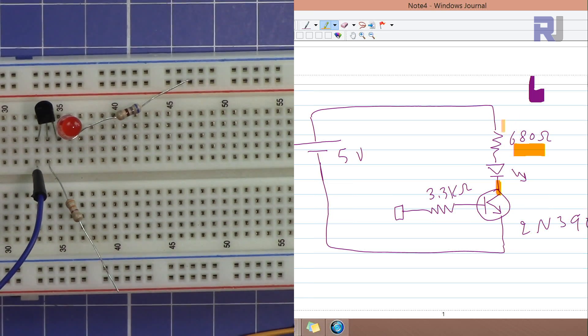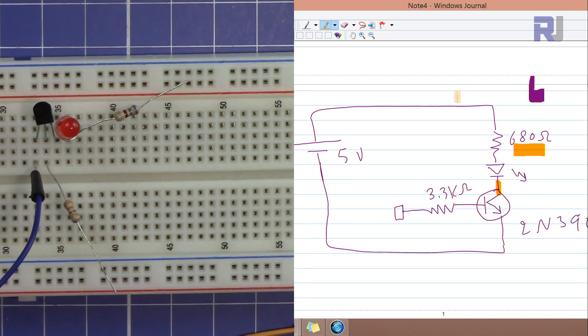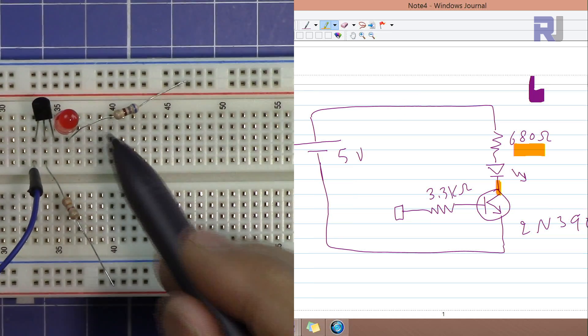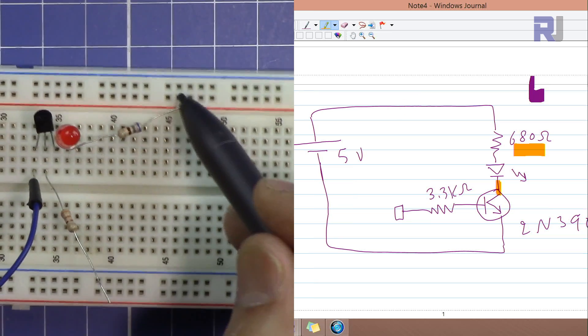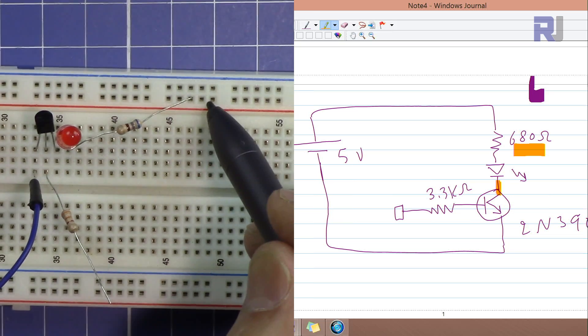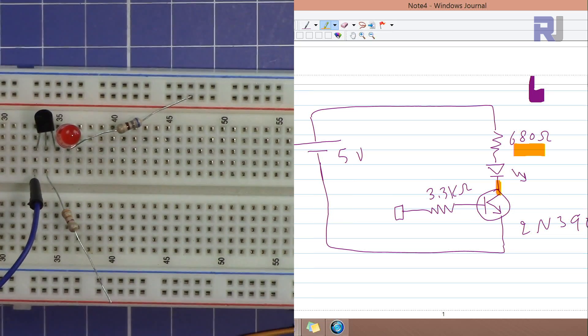If you look at the circuit, we have the 680 ohm resistor connected to 5 volts. Here at the circuit, 680 ohm is connected to this one which is positive. Then according to the circuit here, the emitter of this transistor is connected to the negative.